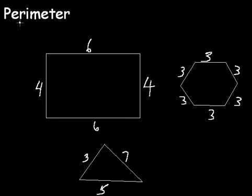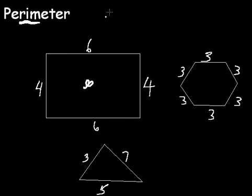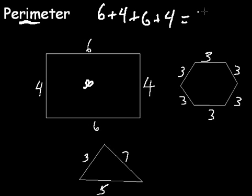This lesson we're going to take a look at perimeter. The word 'rim' appears in perimeter, and what that means is the distance around. So let's take this rectangle here. We have 6, 4, 6, and 4. To find the perimeter we're going to add those together: 6 plus 4 plus 6 plus 4 equals 20.